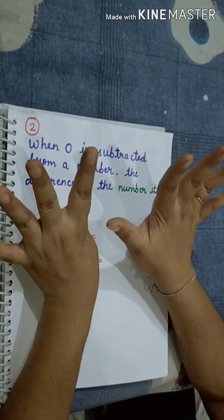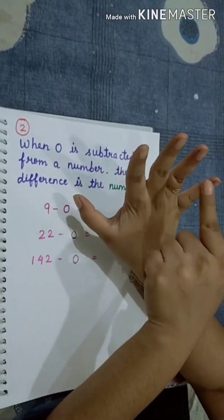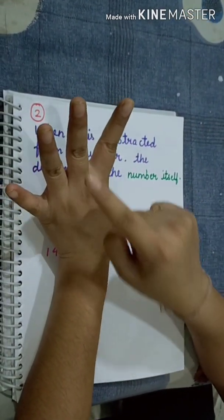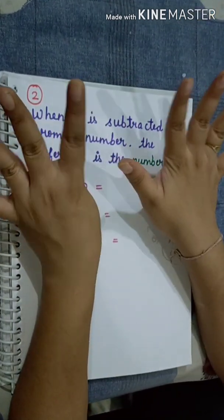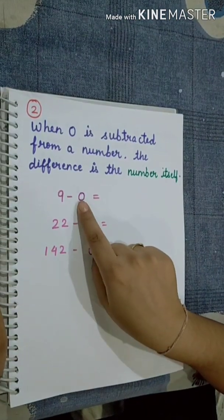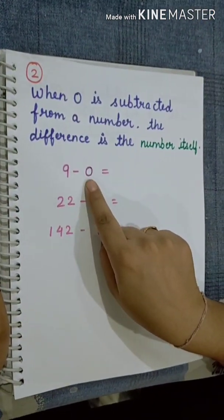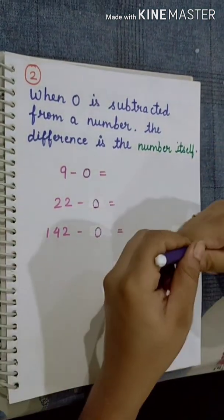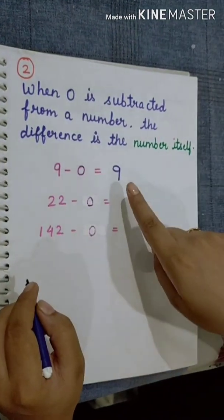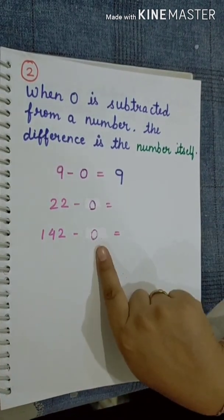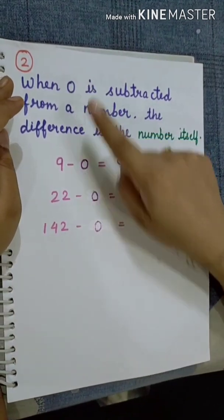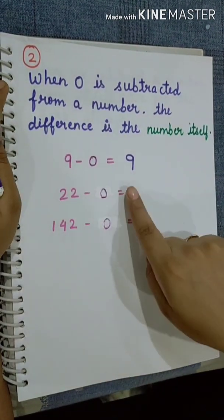So how many fingers are left? 1, 2, 3, 4, 5, 6, 7, 8, 9. We still have 9 fingers. That means if we subtract 0 from any number, we get the number itself. 9 minus 0 is equal to 9. No matter how big or small the number is, if we subtract 0, we get the number itself.